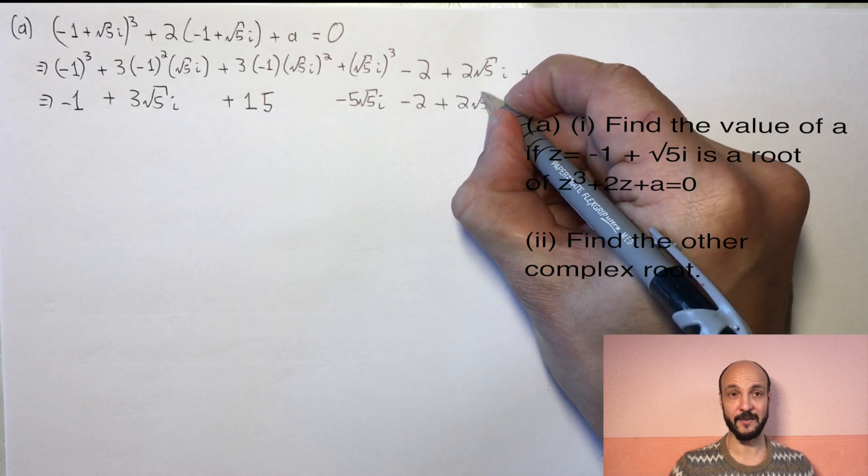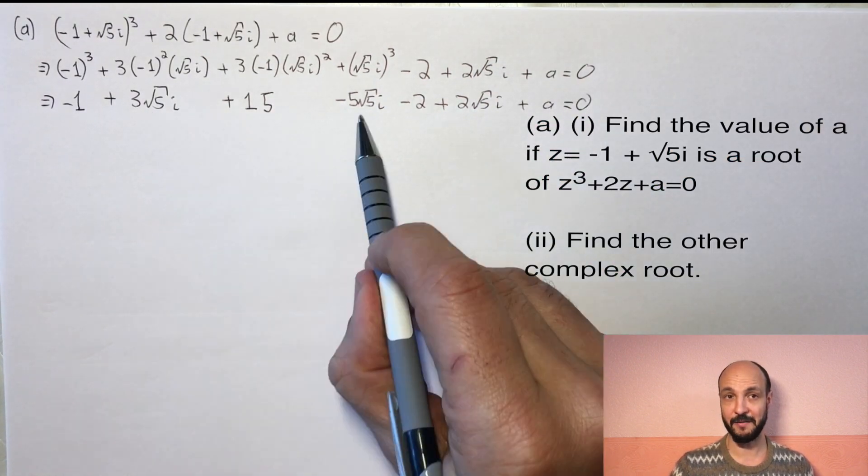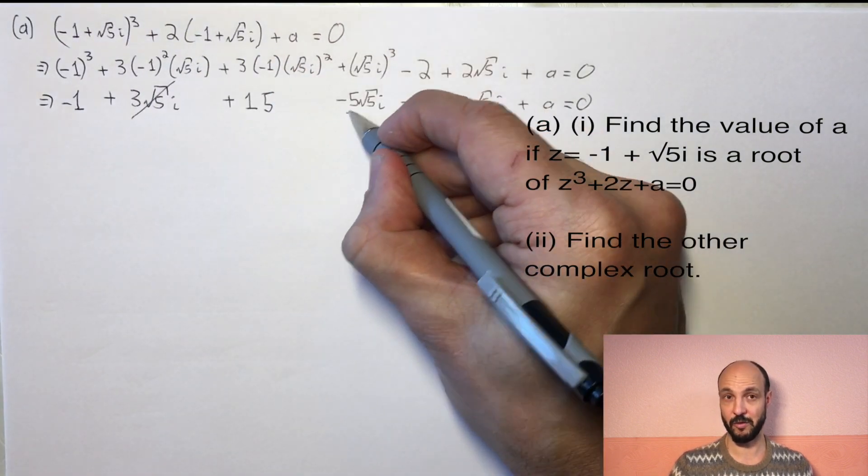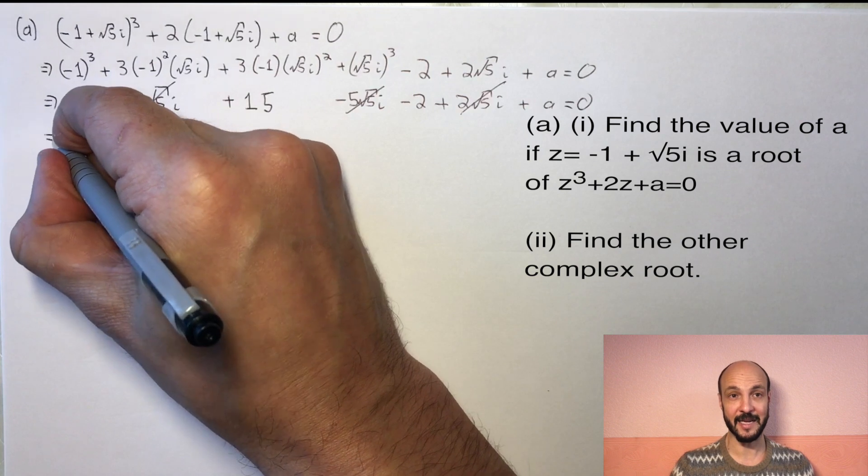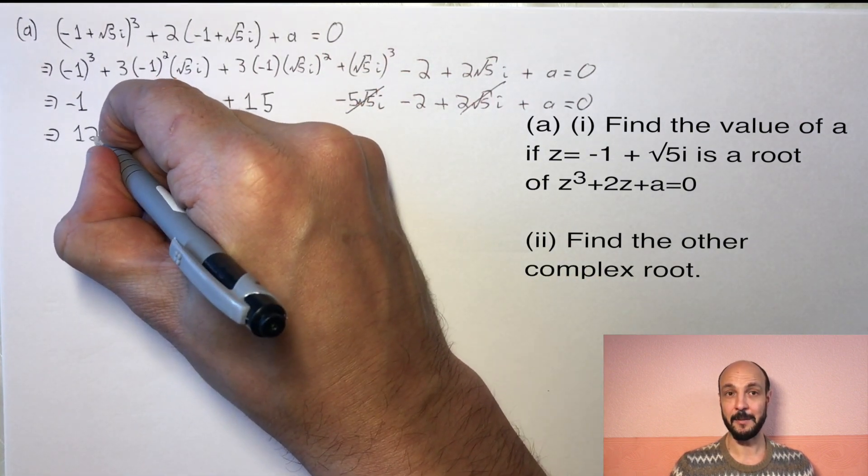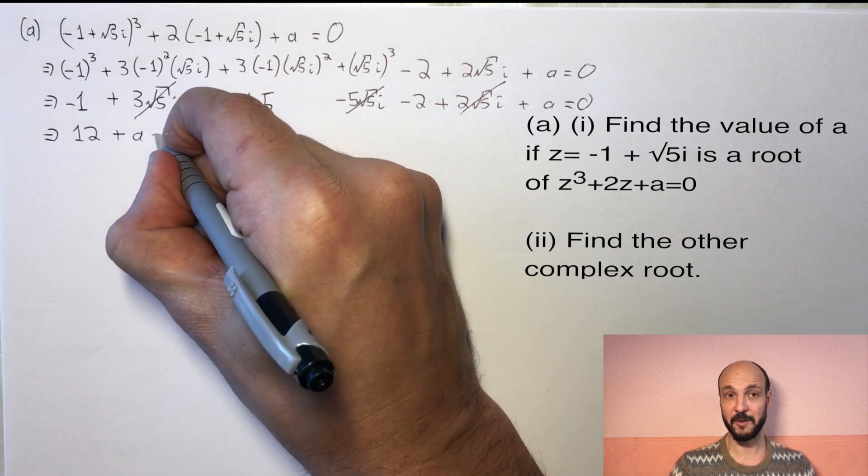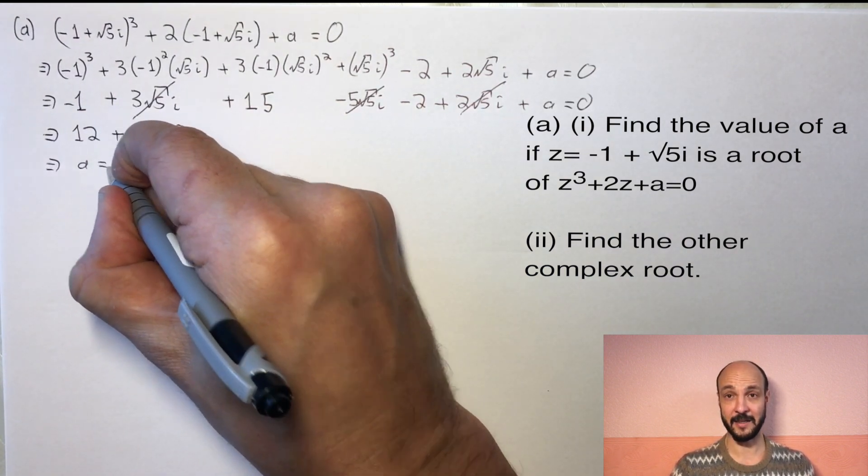Now if we look carefully at the left-hand side, we can see we've got +3√5i, -5√5i, and +2√5i. They all cancel out, so all our imaginary terms cancel out, and we're left with -1 + 15 - 2, which is 12, plus a = 0. So straightforwardly we can see a = -12.